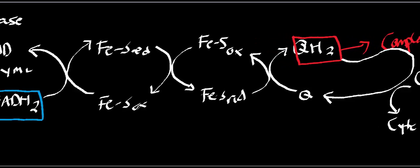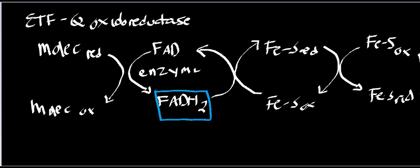Just understand that electron-transferring flavoprotein:ubiquinol oxidoreductase is ultimately transferring electrons to iron-sulfur centers. To be perfectly clear: there is an electron-transferring flavoprotein:ubiquinone oxidoreductase, but there is also just a simple electron-transferring flavoprotein. The electron-transferring flavoprotein is actually what's transferring the electrons from the reduced molecule.